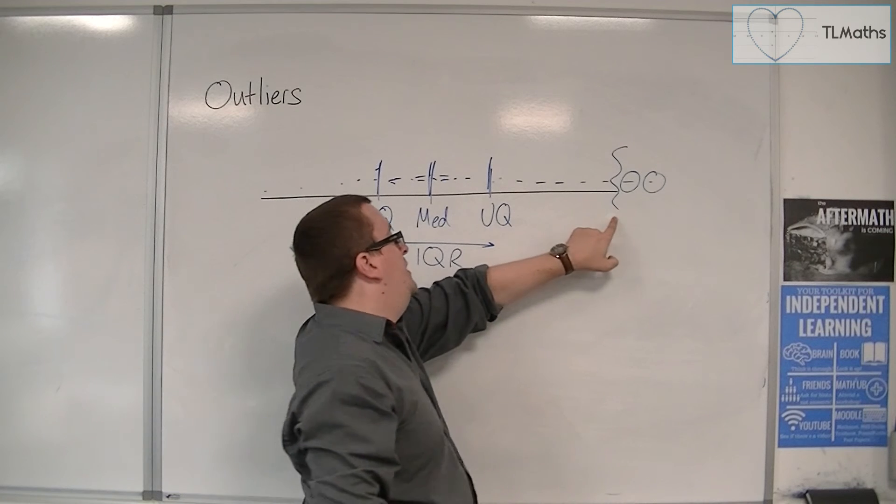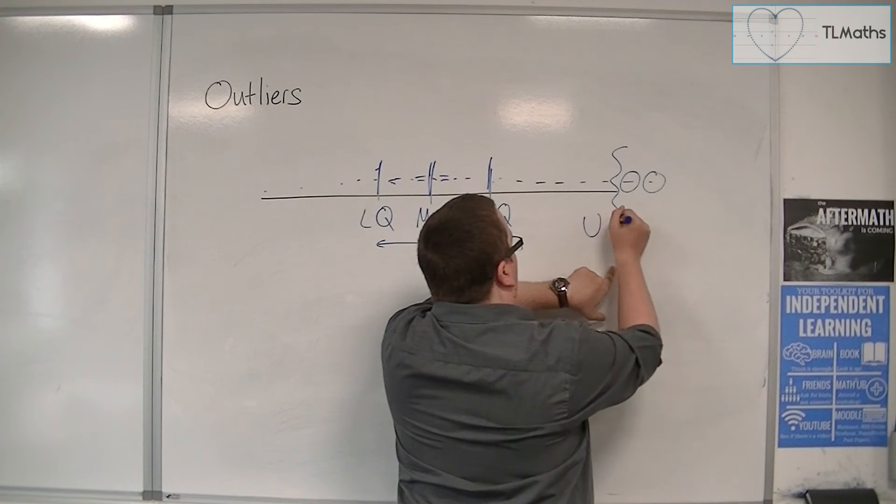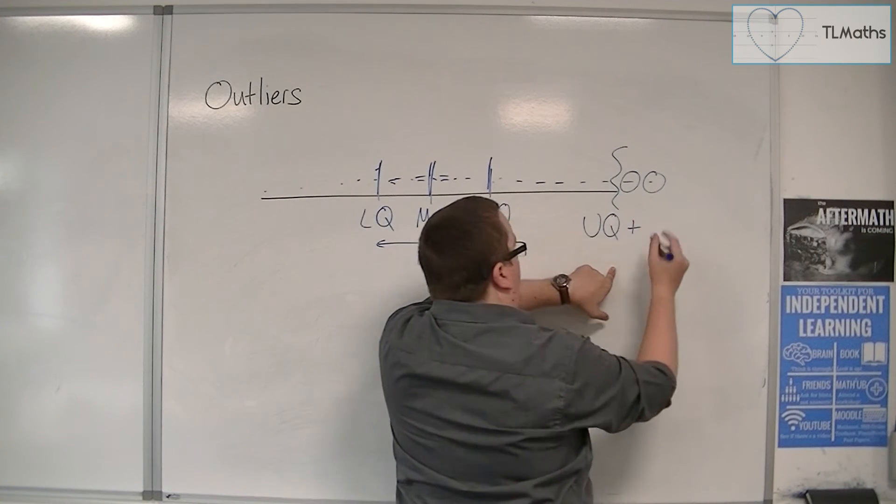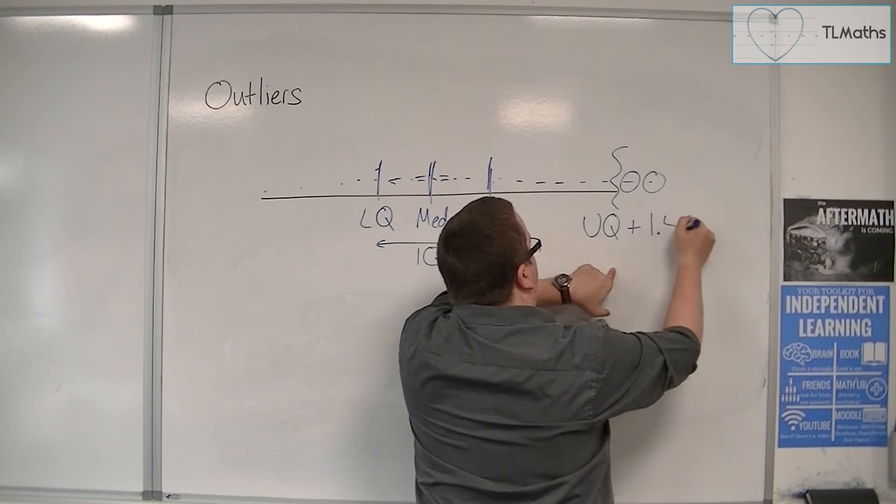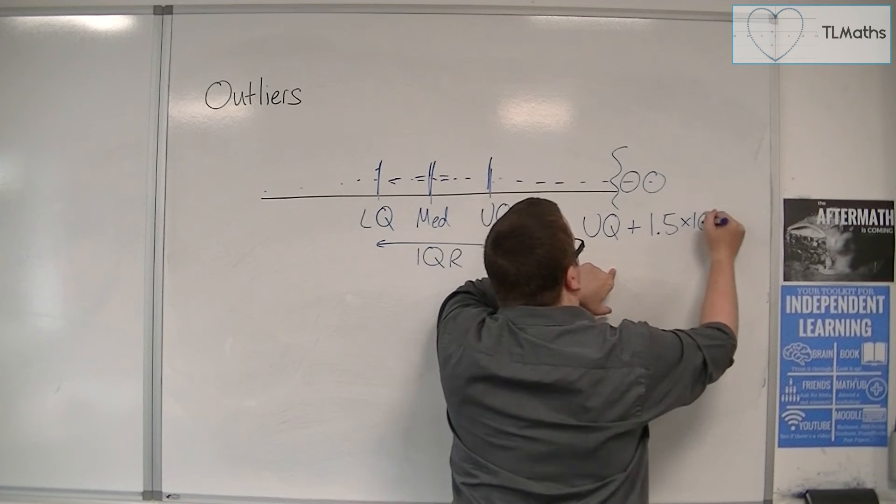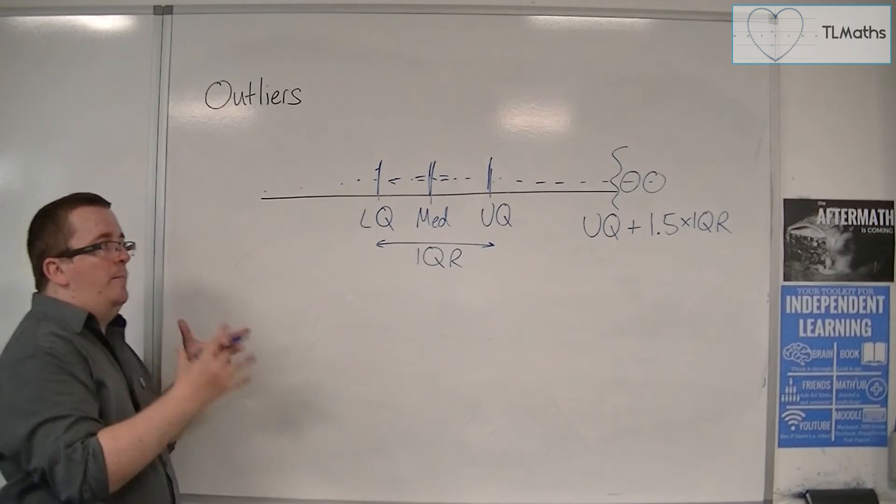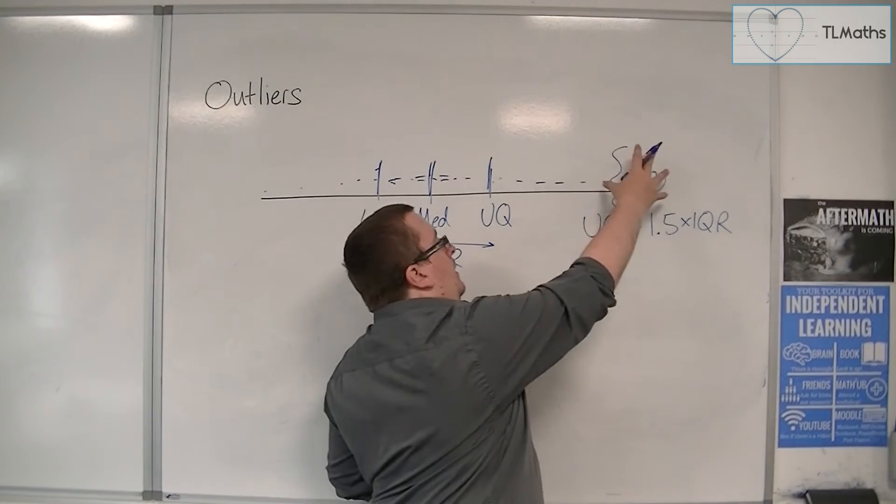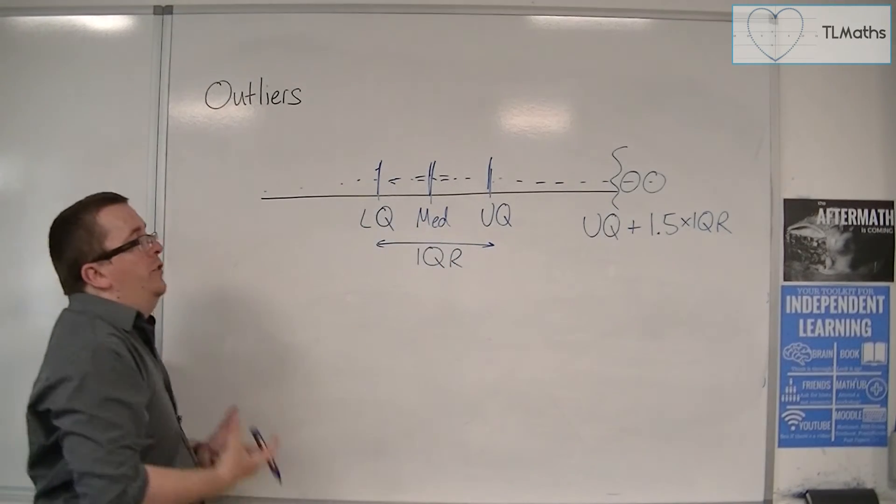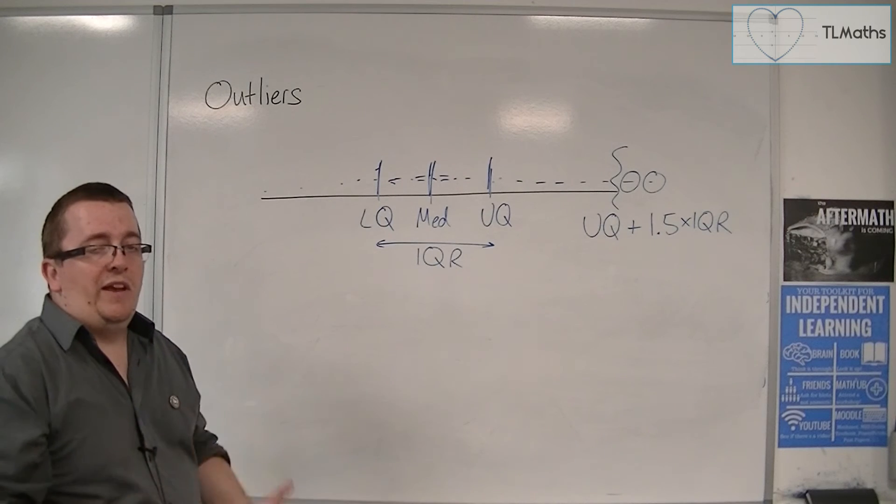And that point is the upper quartile plus 1.5 times the interquartile range. Beyond that point, we will count those bits of data as outliers.